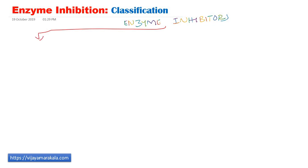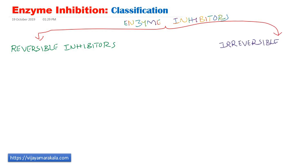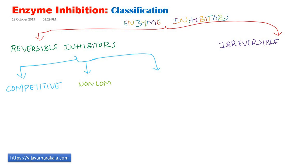The first type is reversible inhibitors, where the binding of inhibitors to the enzyme is not tight — not by covalent bonds, usually by non-covalent bonds. The reversible inhibitors are subclassified into three types: competitive inhibitors, non-competitive inhibitors, and uncompetitive inhibitors.